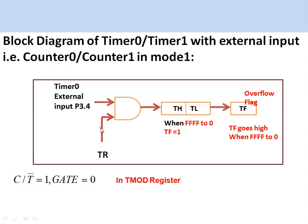In the block diagram, GATE is generally set to 0, which means the timer or counter is controlled by software. When C/T-bar equals 1, it is configured as a counter. When the corresponding TR bit is set to 1, the register starts incrementing based on pulses from the external application. When the register overflows, the corresponding TF flag is set to 1, which must be monitored for the counter application.